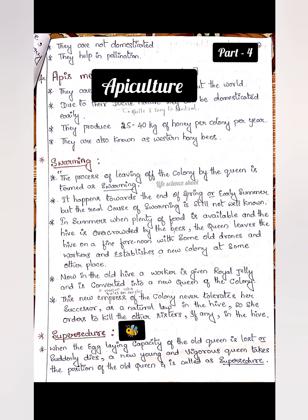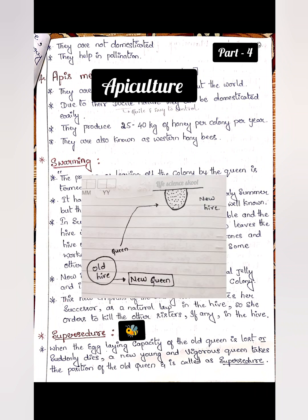When the hive is overcrowded — meaning many bees are present — the queen is going to leave the hive in the forenoon. Some of the older drones are going to follow her, and even some of the workers also follow. These old drones, workers, and the old queen are going to establish a new colony at some other place. Looking at the diagram, this is the old hive — the old queen leaves in the forenoon with some old drones and workers to build a new hive.